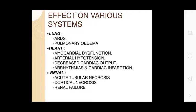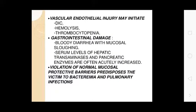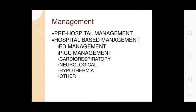Effects on various organ systems: Lungs — pulmonary edema. Heart — myocardial dysfunction, hypotension, decreased cardiac output, arrhythmias. Renal — acute tubular necrosis, cortical necrosis, renal failure, vascular endothelial injury. Blood — DIC, hemolysis, thrombocytopenia. Gastrointestinal — bloody diarrhea with mucosal sloughing; serum levels of hepatic transaminases and pancreatic enzymes are often markedly increased. Disruption of normal mucosal protective barriers predisposes the victim to bacterial and pulmonary infections.